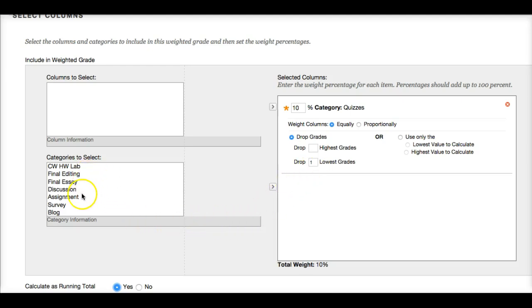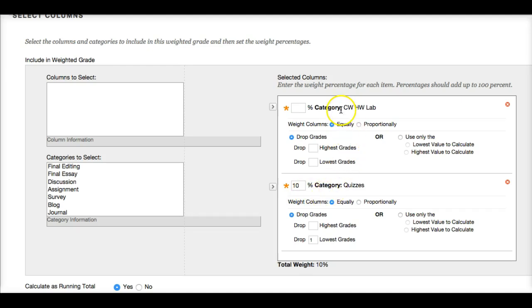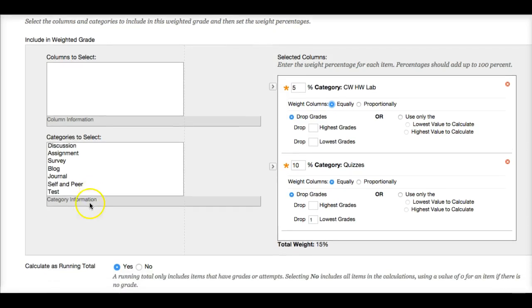The next category is classwork, homework, lab. Click on it. Go to this arrow. And classwork, homework, lab, was 5%. And then we have the test category. Click it over. Here's the test category. Tests were worth 60%.